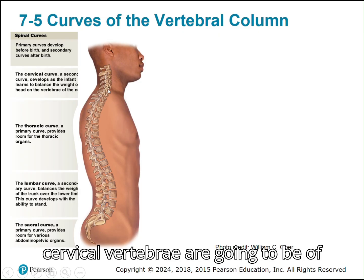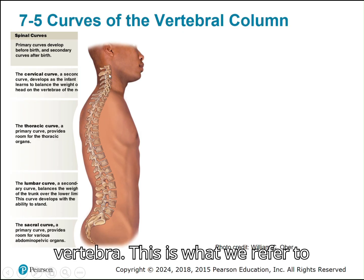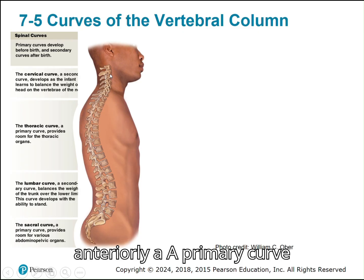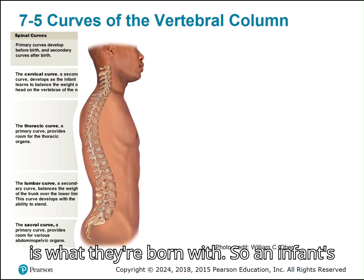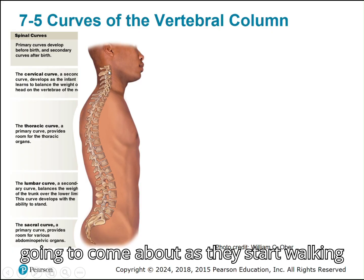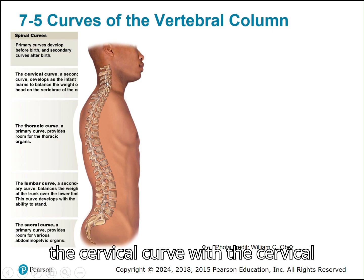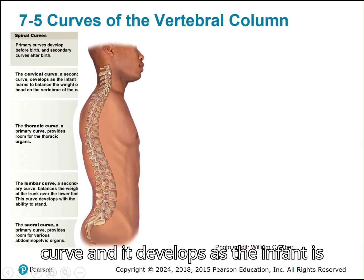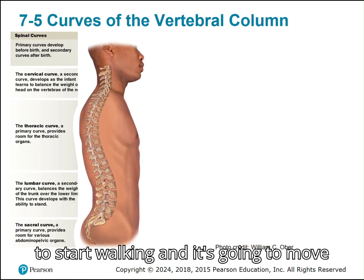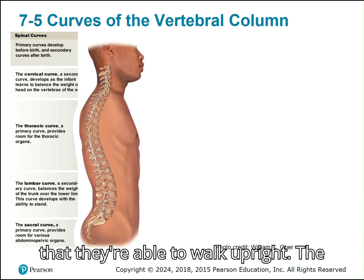Your cervical vertebrae are here — there are seven cervical vertebrae. This is what we refer to as a secondary curve, where it curves anteriorly a bit. A primary curve is what they are born with. The secondary curve comes about as they start walking upright and holding their head. So the cervical curve develops as the infant learns to hold themselves upright and start walking, balancing the weight of the body so they're able to walk upright.